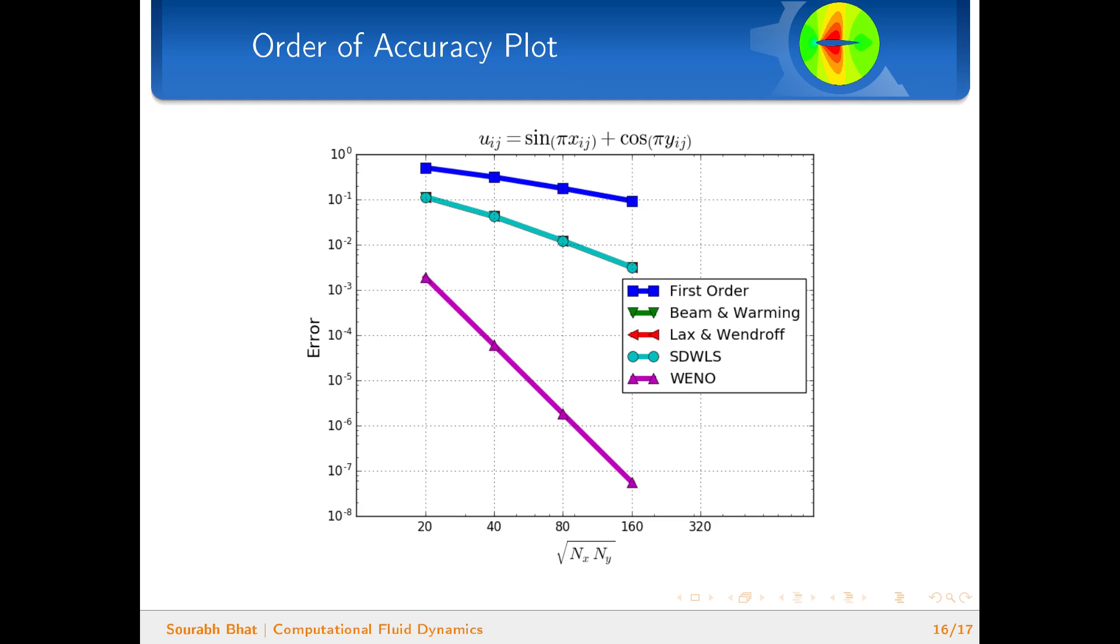Here I'm plotting just the L1 order, but the other ones—L2 and L∞—should also look very similar to the one which is shown here.